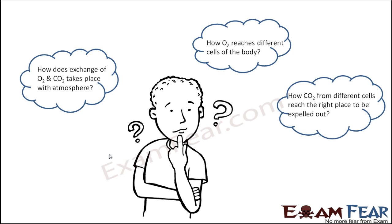How does carbon dioxide from different cells reach the right place to be expelled out? We don't know yet what exactly is that special mechanism in our body which helps us in gaseous exchange. So that is what we are going to focus on in this lesson — how do we actually carry out this exchange of oxygen and carbon dioxide with the atmosphere?